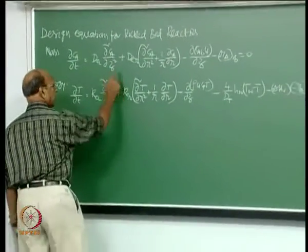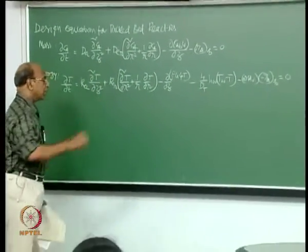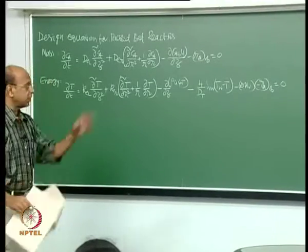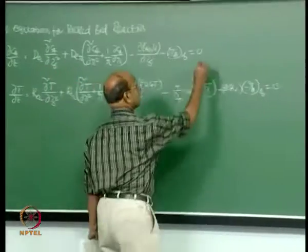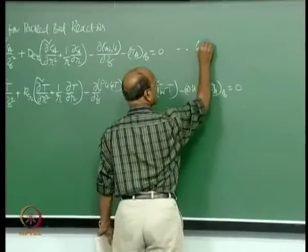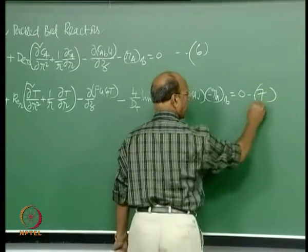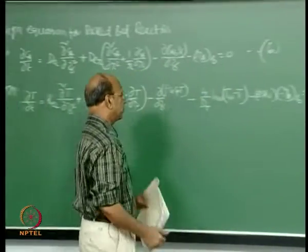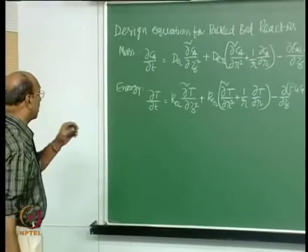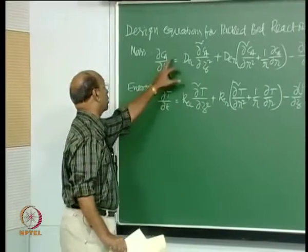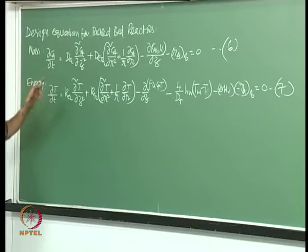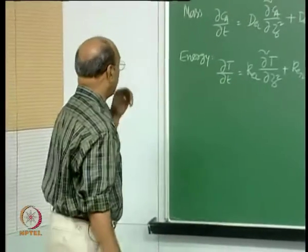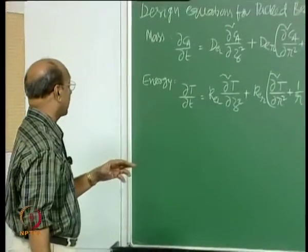These two are the equations derived in the last class. You can see the meaning of this equation — this is equation 6, this is equation 7. This is the accumulation term. Normally we do not take that into account for accumulation, because all steady state reactions. If you do not have a steady state reaction, then you have to take this term.